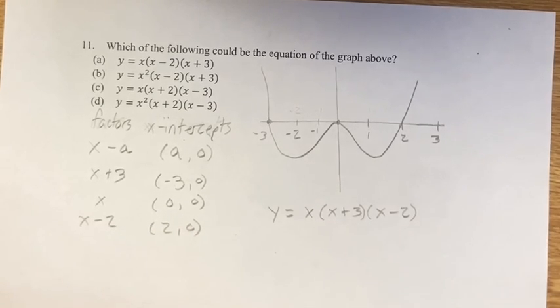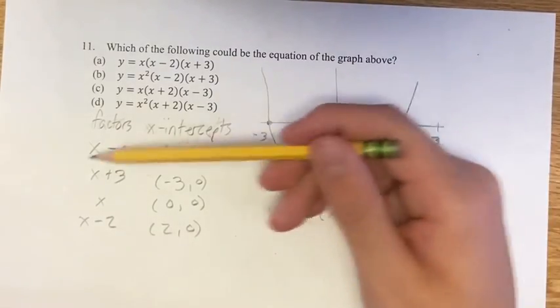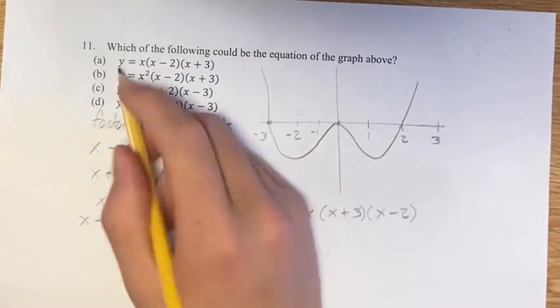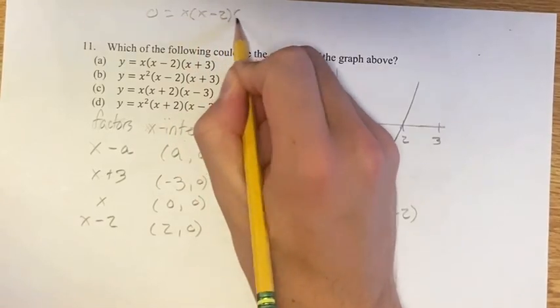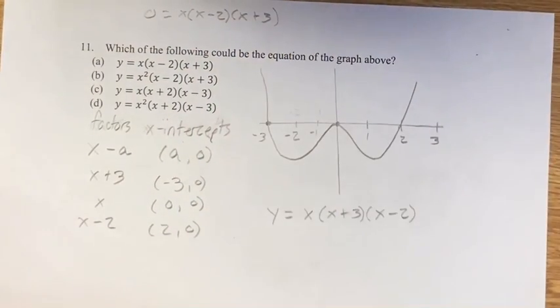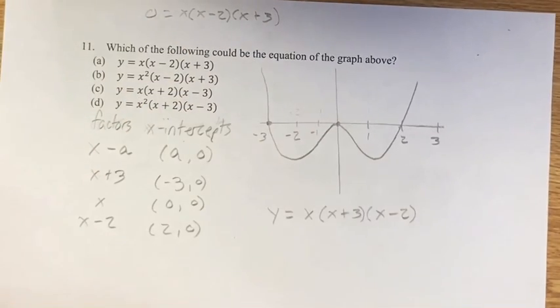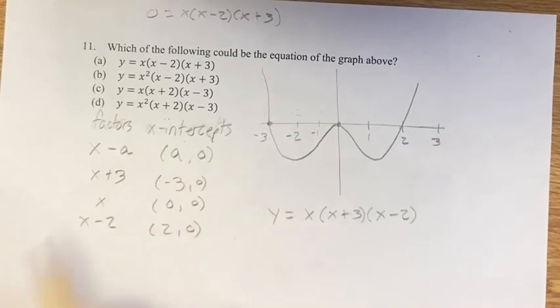Almost. So you might notice here, the way that we can reason this is if you're trying to solve for when, for this first example, let's say 0 is equal to x times x minus 2 times x plus 3. So we're looking for the value of x when y is equal to 0. And you can see how that relates to the x-intercepts, because this is the value of x when y is equal to 0.